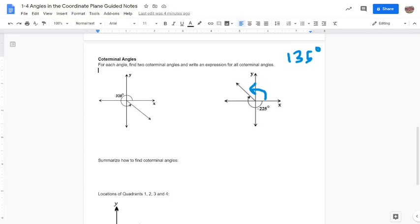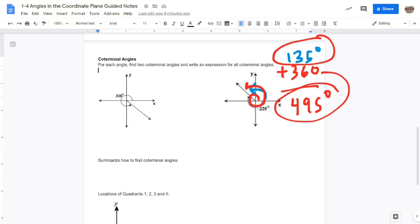Or I could go around 360 like this and then go around another 135. So if you were just to add 360 to that, we would get 495. So this and that represent two different coterminal angles for negative 225.